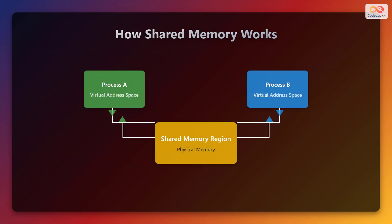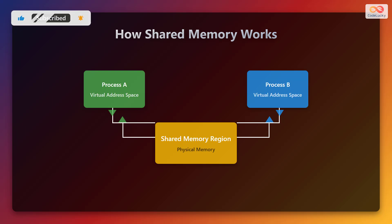How shared memory works. In a typical system, each process has its own virtual address space. Shared memory creates a region of memory that is accessible by multiple processes. This shared region is mapped into the virtual address space of each participating process, allowing them to directly read from and write to the same physical memory location. As you can see from the diagram, process A and process B both have a virtual address space, but they both connect to the shared memory region which resides in the physical memory.